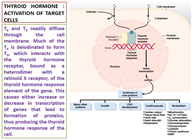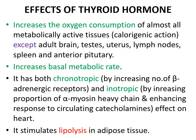Thus, producing the thyroid hormone response of the cell. One of the principal functions of thyroxine is to increase the number and activity of mitochondria, which in turn increases the rate of formation of ATP to energize cellular function. Thus, it increases the oxygen consumption of almost all metabolically active tissues.